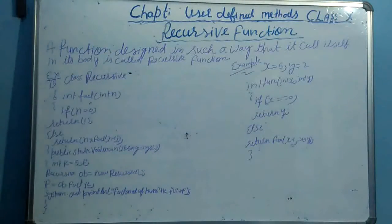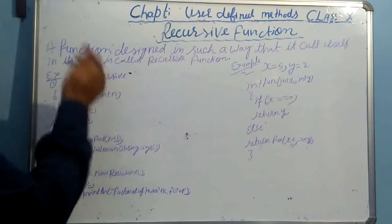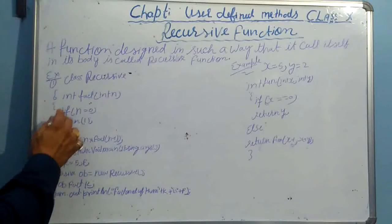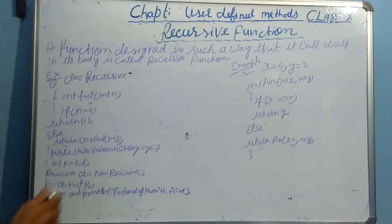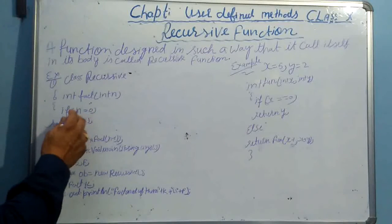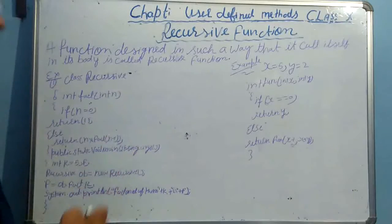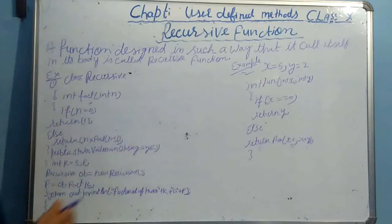Now let us understand the example. This is the program for the factorial. Class recursive, integer factorial, integer n. If n is equal to 1, return 1. If n is equal to 0, return 1. Else return n multiplied by fact(n minus 1). And public static void main with a string argument function.